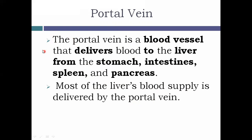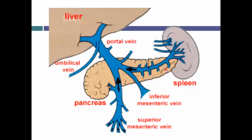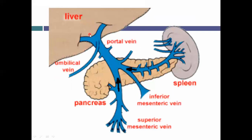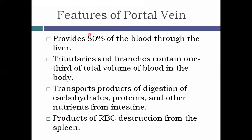Blood flows from the stomach, intestine — via the inferior and superior mesenteric veins — from the spleen and pancreas to the liver. The portal vein provides about 80% of the blood that flows through the liver. Its tributaries and branches hold up to one third of the total blood volume in our body.